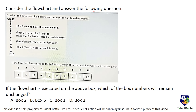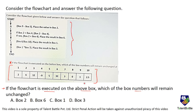Consider the flowchart and answer the following question. The question is given here: if the flowchart is executed on the given boxes, which of the box numbers will remain unchanged? Ten boxes are given and this flowchart is given, so we are going to start solving as per the flowchart.